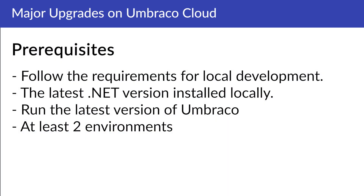First of all, you need to follow the requirements for working locally with the Umbraco CMS on your computer. I'll add the documentation in the description down below. You also need to have the latest .NET version installed locally on your computer, as the latest version of Umbraco is always running on the latest .NET version as well. You also need to run the latest version of Umbraco, and we recommend that you have at least two environments, as if anything goes wrong, you can always delete the second environment. Now let's go ahead and upgrade an Umbraco Cloud Project to the latest major version.